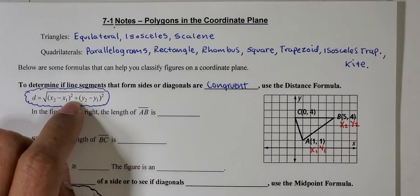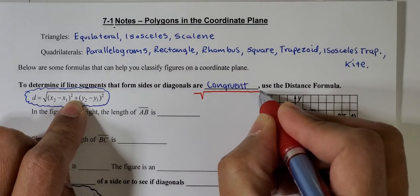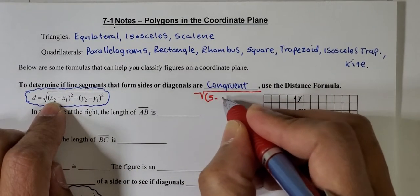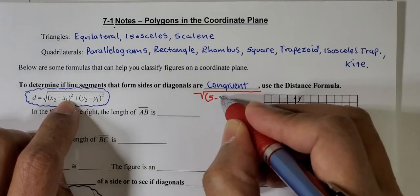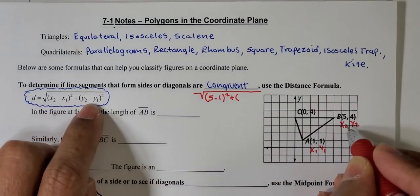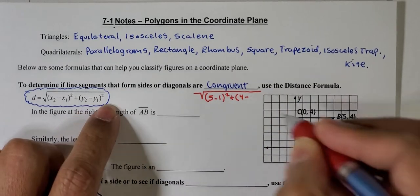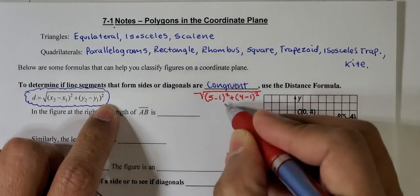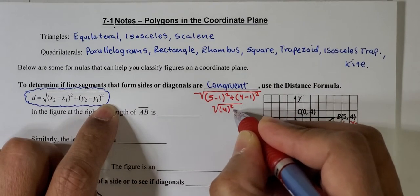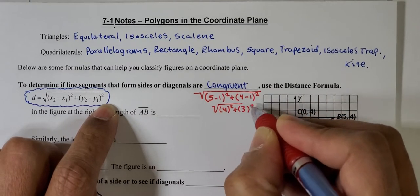I'm going to substitute the values into this formula. So this is the square root of, x2 is 5 minus x1, x1 is 1, and then take the square, plus y2, y2 in this case is 4, minus y1, y1 is 1, and then take the square. So this is 5 minus 1 is 4, so 4 squared plus 4 minus 1 is 3, so this is 3 squared.